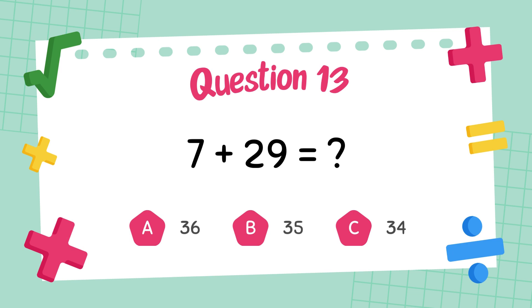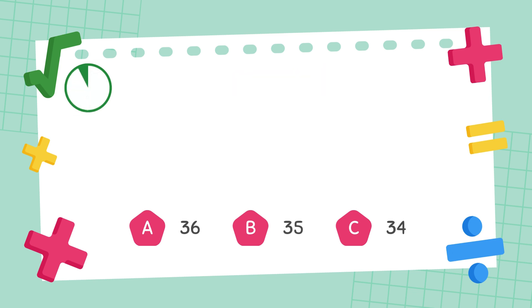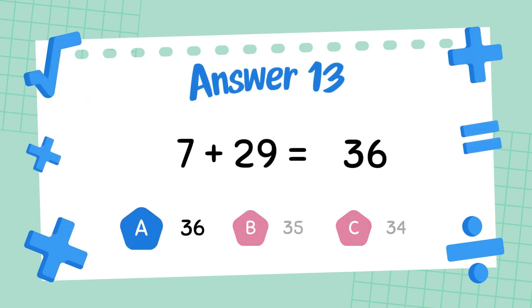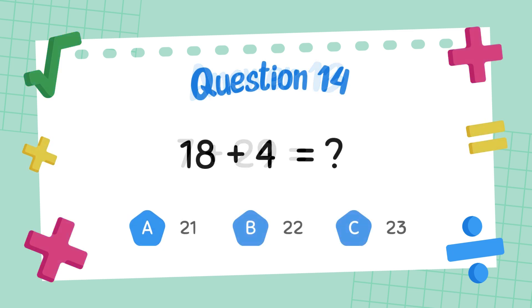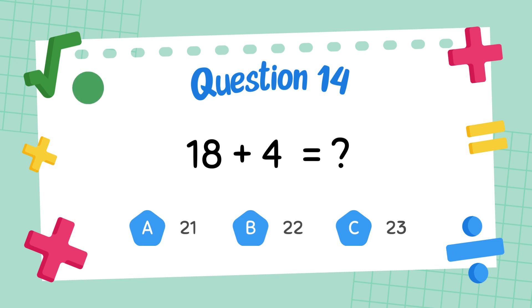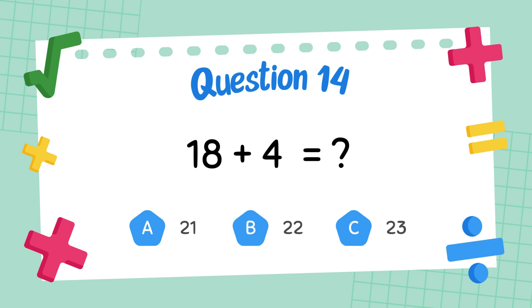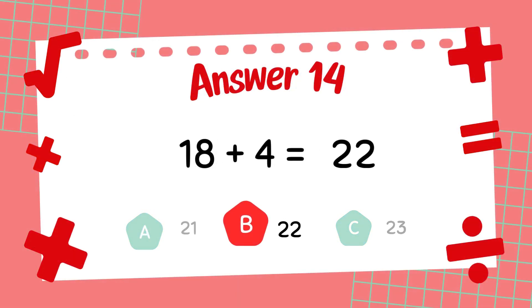What is 7 plus 29? The answer is 36. What is 18 plus 4? The answer is 22.